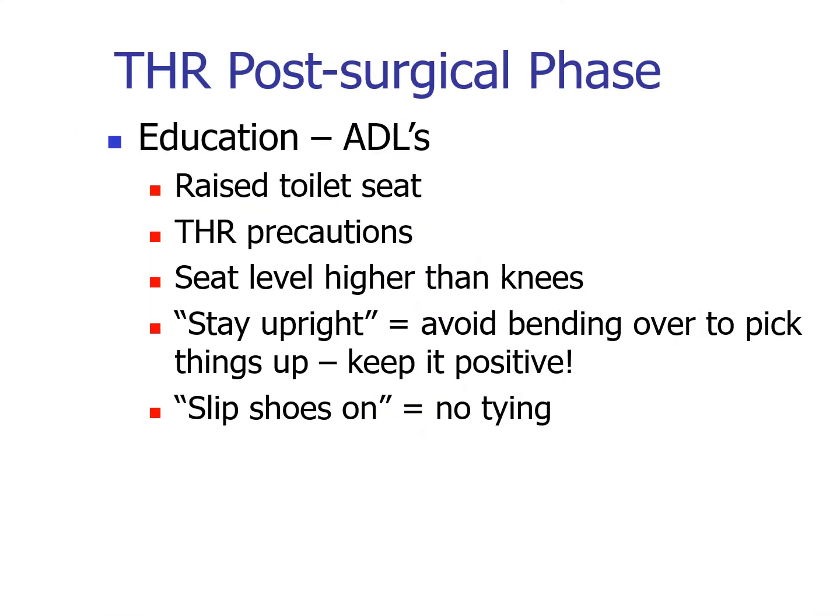Several factors can be addressed in post-surgical patient education. Regarding total hip precautions, if flexion is to be avoided, a raised toilet seat should be used, and patients should always sit at levels where their hips are higher than their knees. They should be careful bending over to pick things up and should stay upright. Tying shoes or taking socks on and off can facilitate hip flexion beyond 90 degrees, so slip-on shoes are recommended, especially in the early stages following surgery.